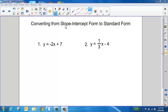To convert an equation from slope-intercept form to standard form, remember that we want to get it to look like standard form, which is Ax plus By equals C.